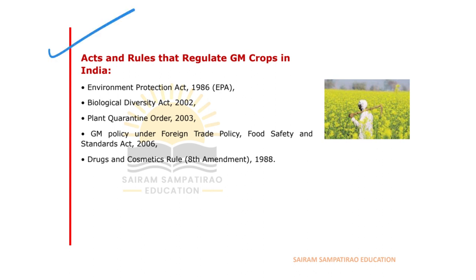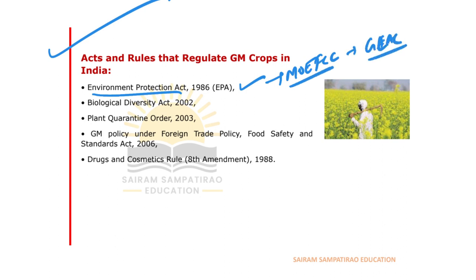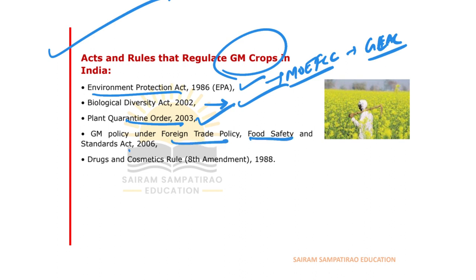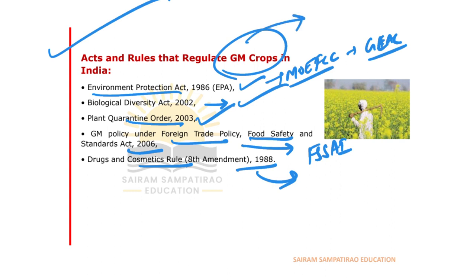The key acts regulating GM crops in India are: the Environmental Protection Act 1986 — which gives powers to MoEFCC and GEAC; the Biological Diversity Act; the Plant Quarantine Order 2003; the Foreign Trade Policy; the Food Safety and Standards Act 2006 — which gives authority to FSSAI to check all foods; and the Drugs and Cosmetics Rules 1988.